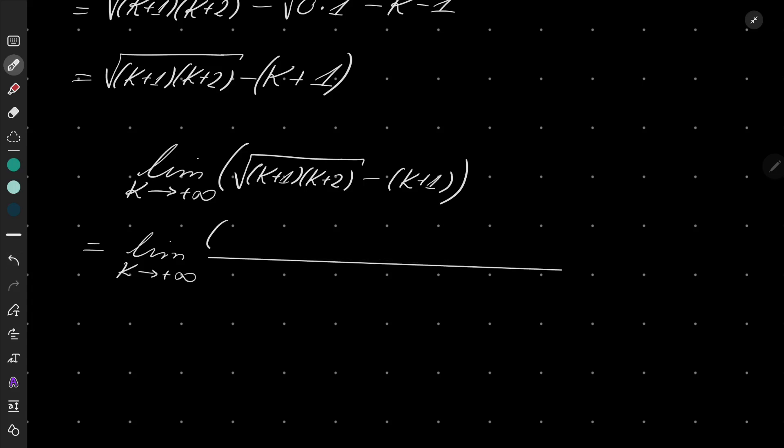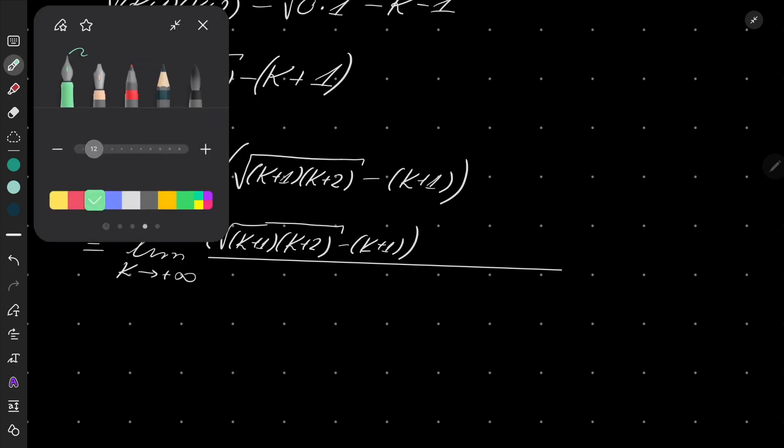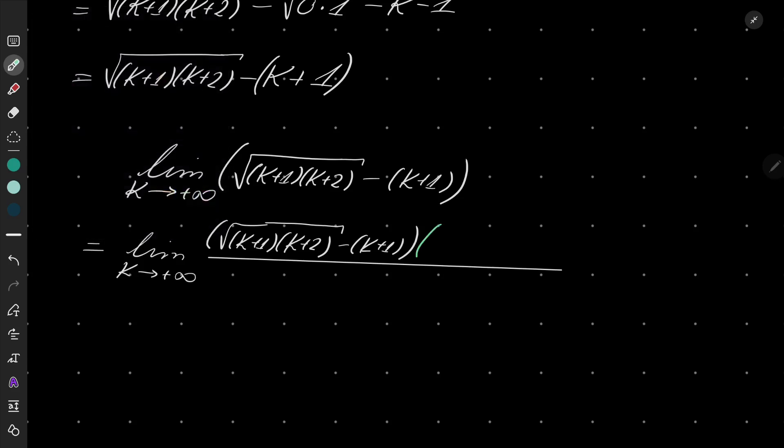We can write it as our root. And now I will artificially multiply by square root of (K+1)(K+2) plus K+1, and in the denominator the same, so my fraction stays the same. And now look what happens.